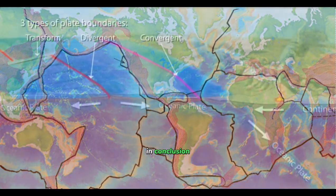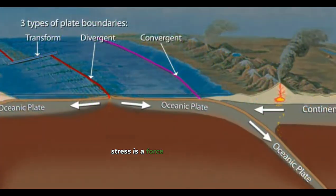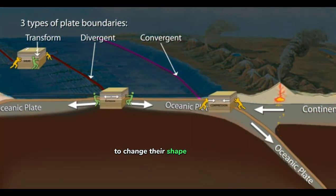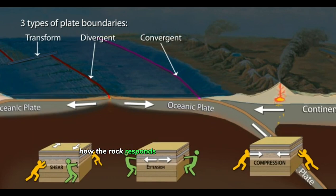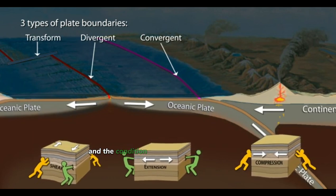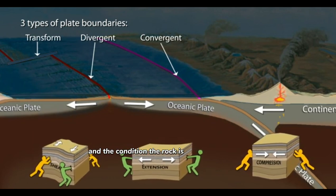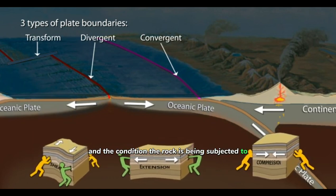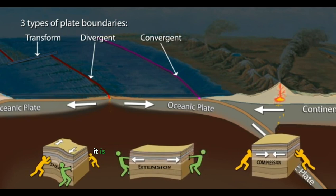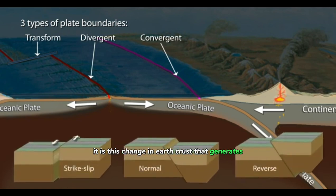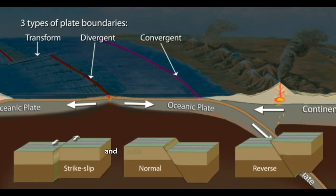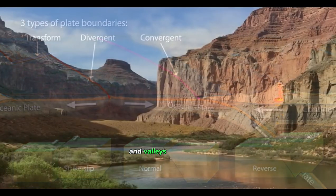In conclusion, stress is a force that acts on rocks to change their shape or volume. How the rock responds depends on the type of stress and the conditions the rock is being subjected to when it encounters stress. It is this change in Earth's crust that generates the different types of faults and plate boundaries and results in the dramatic mountains and valleys that we see.